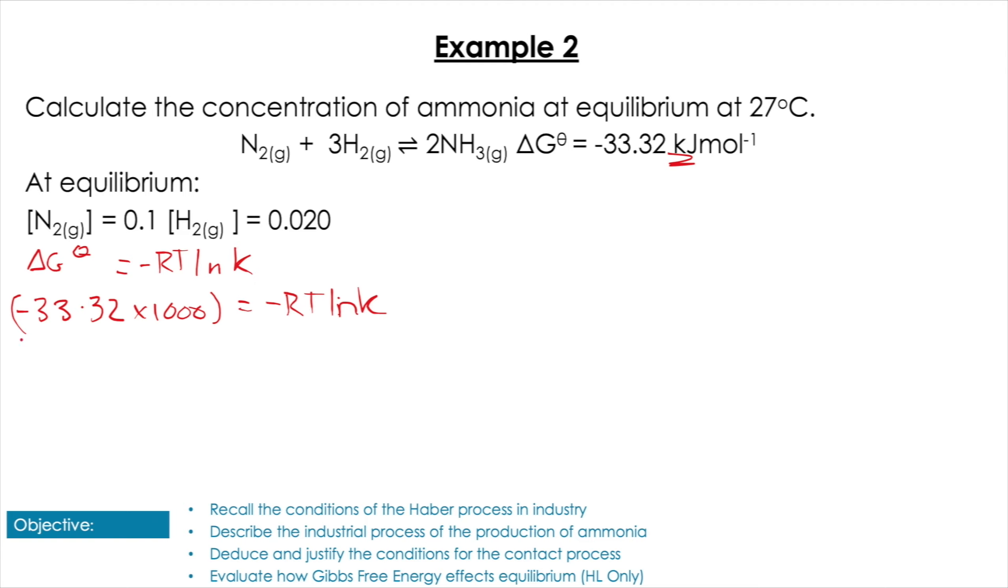Now we can use the value of R given in the data booklet this time because it's not asking us to calculate that. What we want to find is we want to find K. So I'm going to multiply that out and do -33,320 = -8.31 × 300—because remember we've been given it in degrees, we want it in Kelvin—times ln K. I'm going to rearrange that to give me ln K, which is going to give me -33,320 / (-8.31 × 300).